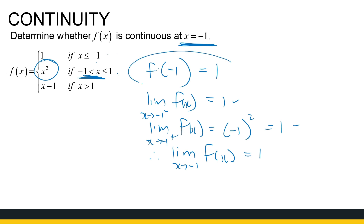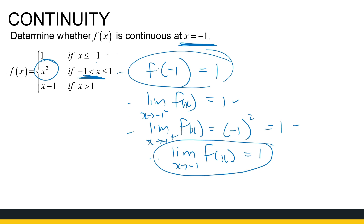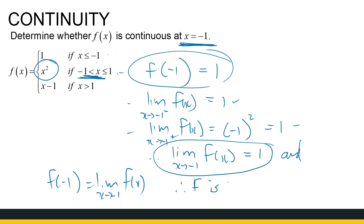Now we compare these two values, because that's the definition of continuity — we compare the limit as x approaches minus 1 of f of x with f of minus 1. Both are equal to 1, so f of minus 1 equals the limit as x approaches minus 1 of f of x. We can therefore conclude that f is continuous at x equal to minus 1.